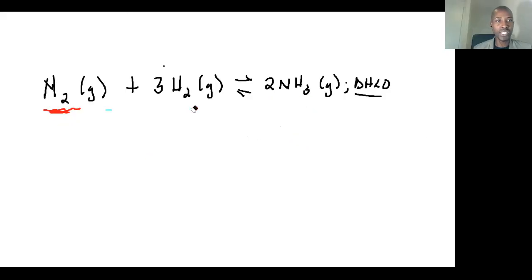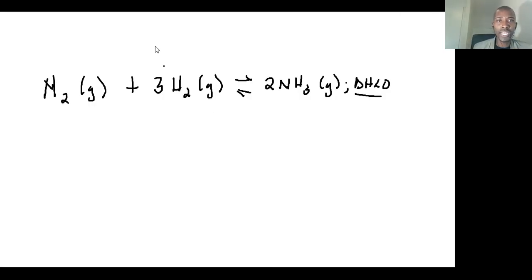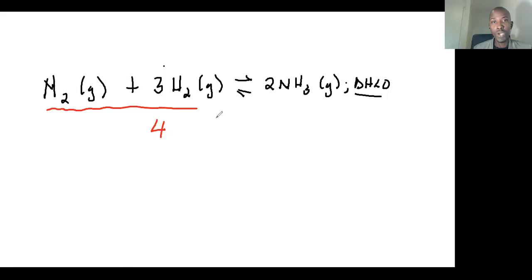Let's try pressure. Pressure is about gases. To increase the pressure of a system, you decrease the volume. With pressure, all you do is count the number of moles on each side. On the left-hand side I have three moles of hydrogen plus one mole of nitrogen — four moles total. On the right-hand side I only have two moles of ammonia. So four moles going to two moles is the forward reaction, and two moles going to four moles is the backward reaction.